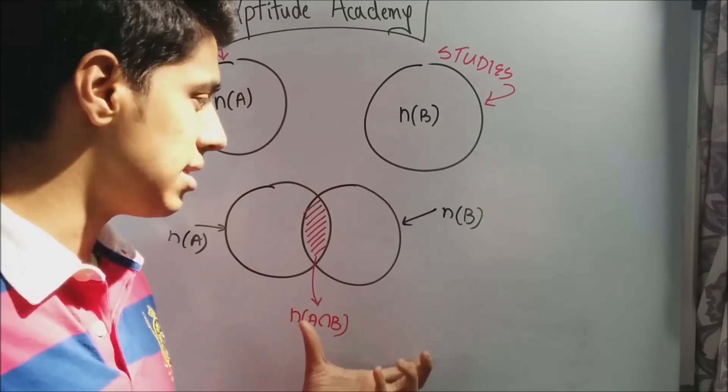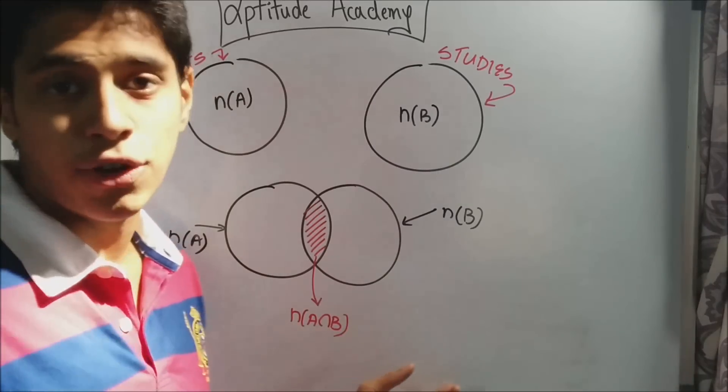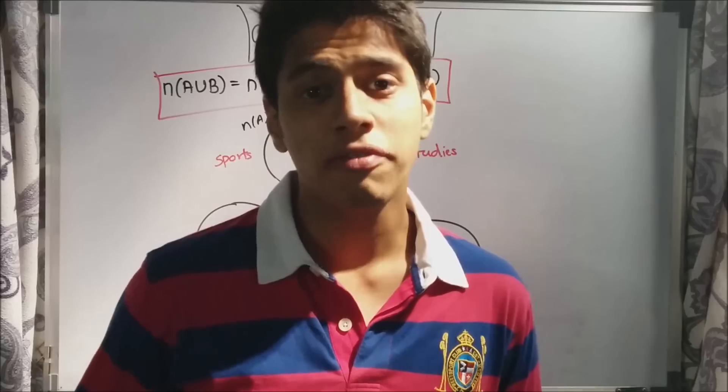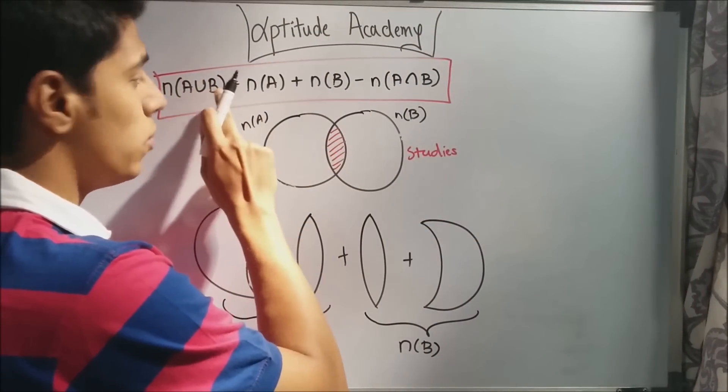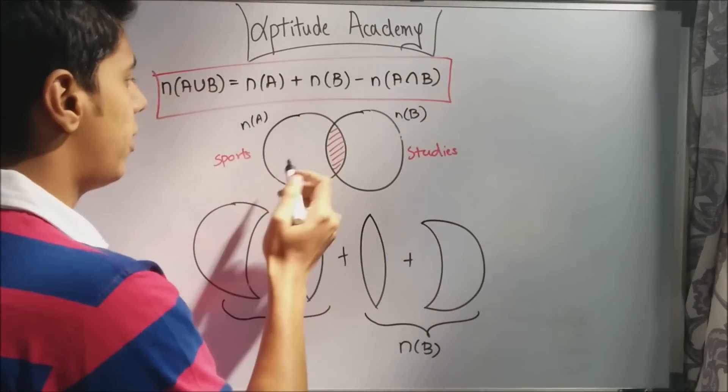Now, what will be your answer? If you say it's n(A) plus n(B), then you're wrong. This is how you find out. Now, you have to find the number of kids that either study, play, or do both of them. That will be n(A union B). Now, don't look at this formula right now. Just understand this.